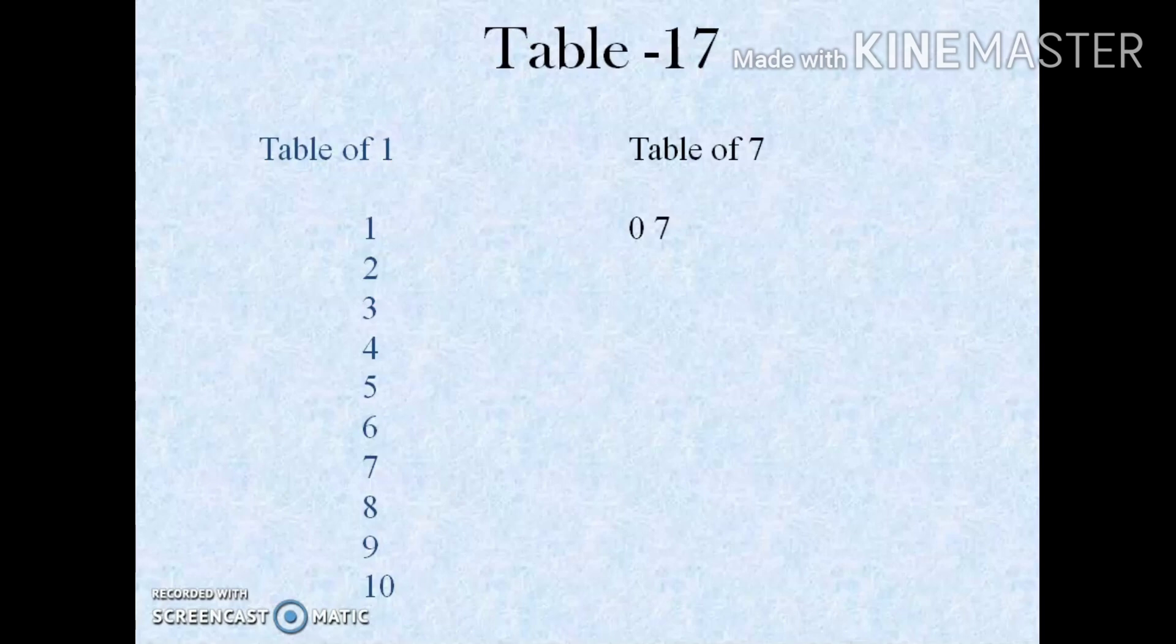You have to write the table for 7: 7 1s are 7, 7 2s are 14, 7 3s are 21, 7 4s are 28, 7 5s are 35. Just up to 7 10s are 70 you have to write.